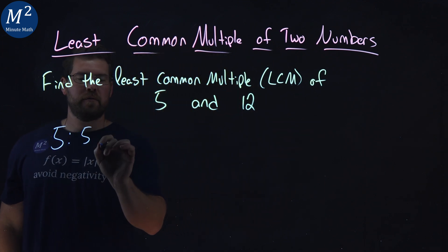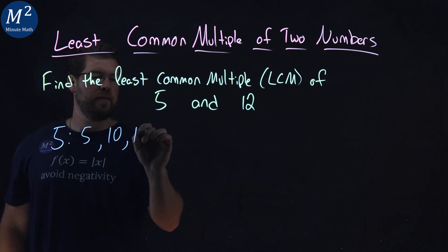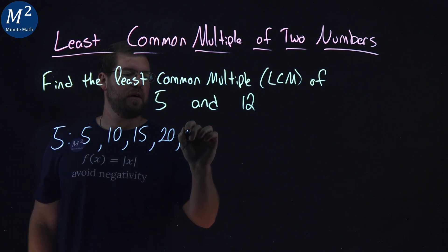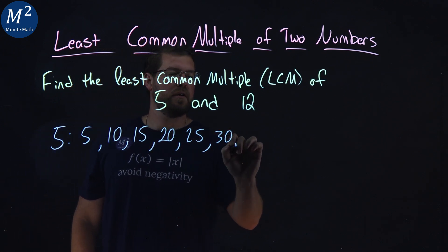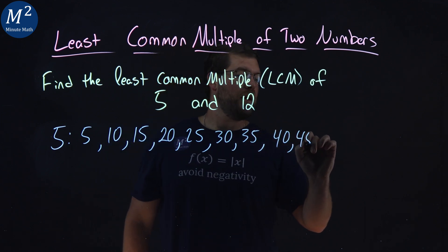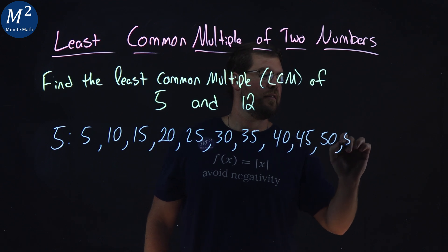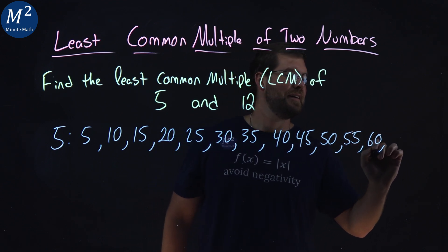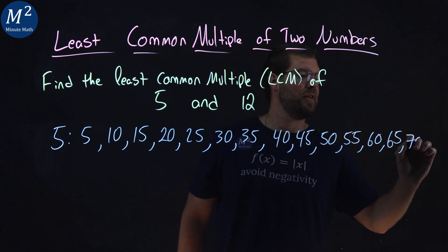So we have 5, 10, 15, 20, 25, 30, 35, 40, 45, 50, 55, 60, 65, 70. That should be pretty good.